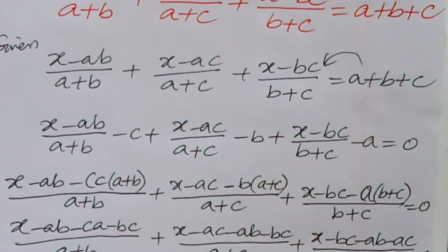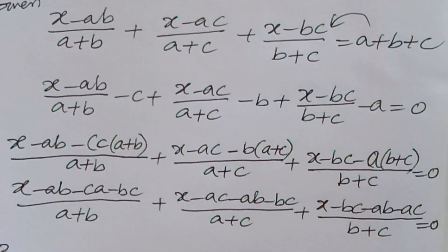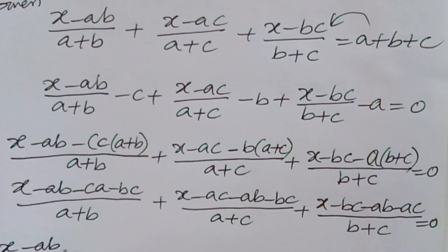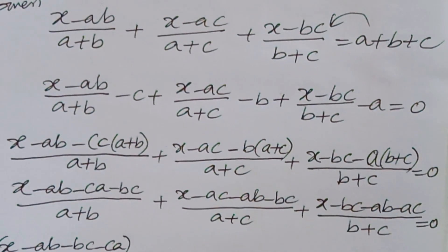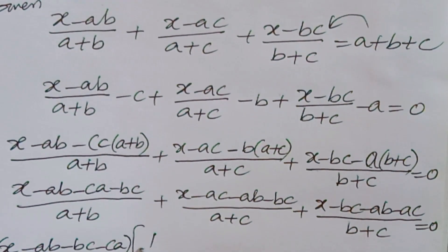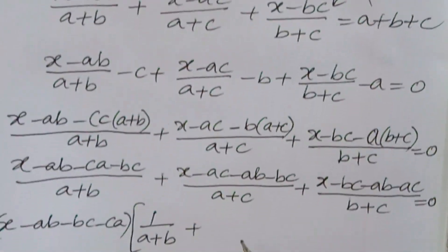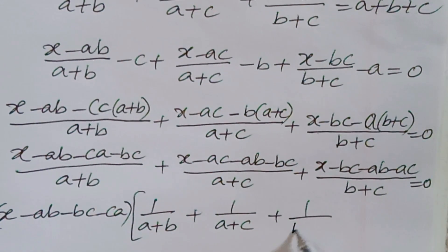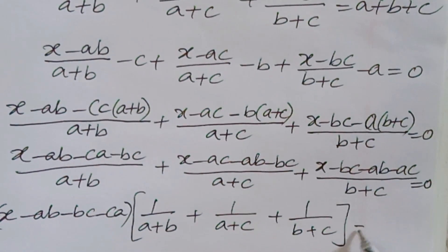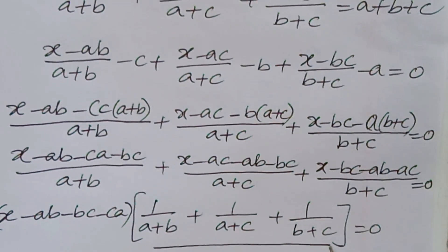So here the numerator is common in all the terms, so we are taking common: (x - ab - bc - ca) times [1/(a + b) + 1/(a + c) + 1/(b + c)] = 0. This second part cannot be equal to 0.